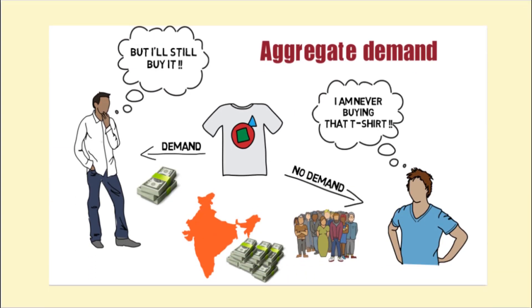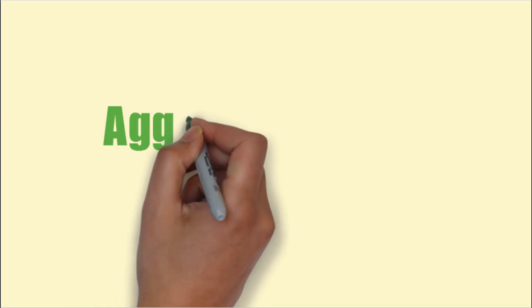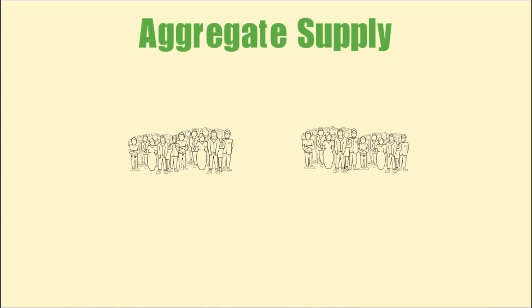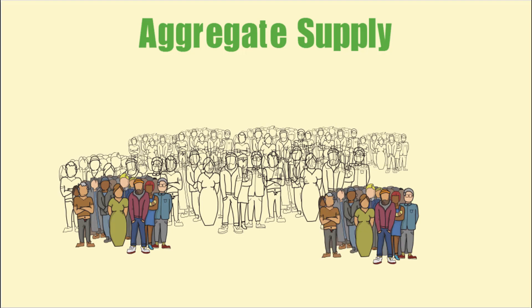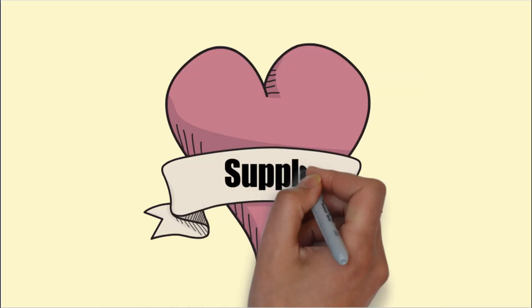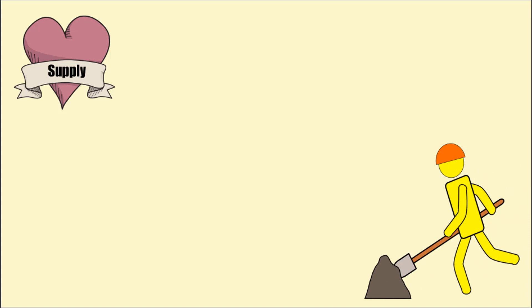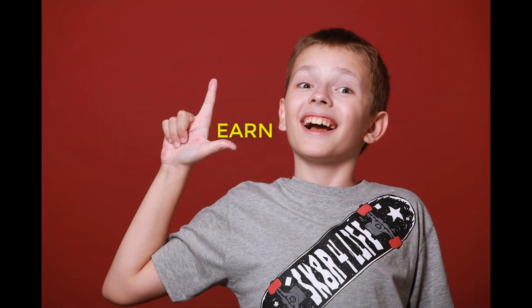In the previous video, we studied determinants of aggregate demand. In this video, we will study determinants of aggregate supply. Can you imagine thousands of people demanding different commodities but no one to supply it to them? Supply is the heart of any economy. So let's dig a little deeper and try to understand it intuitively.